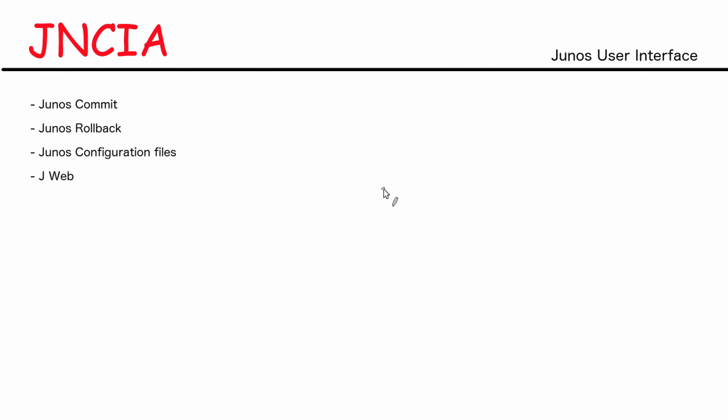Hello and welcome back to this video on the Junos User Interface. This is the third video of the Junos User Interface series. In the last video, we looked at topics such as filtering output and how to use the Pipe command. We also looked at output levels like Terse, Brief, Extended, and Detail. We looked at the differences between Active and Candidate configuration, configuration modes such as Private, Shared, and Exclusive, different configuration hierarchies, and some navigation commands.